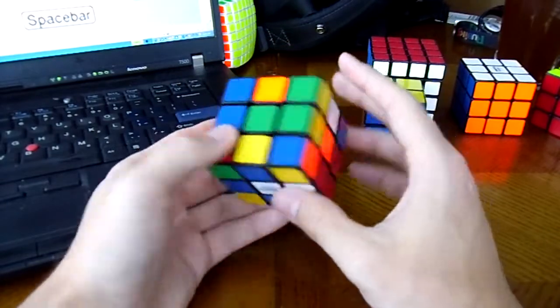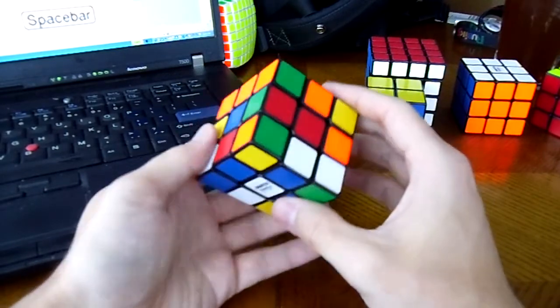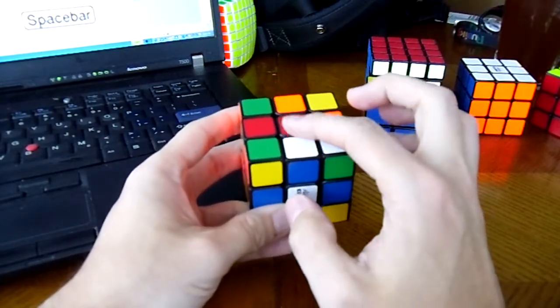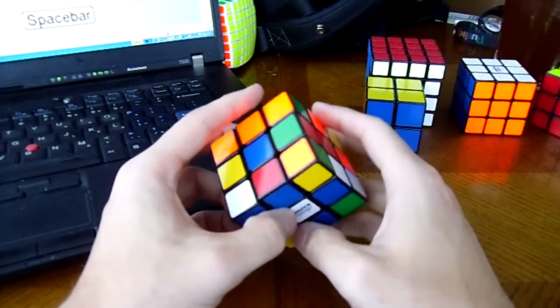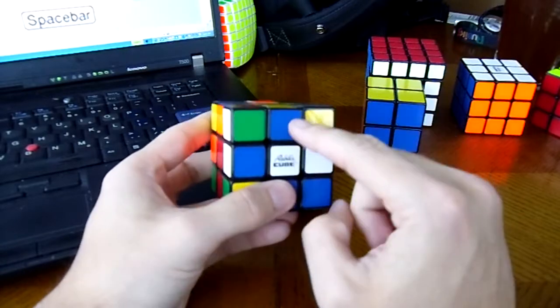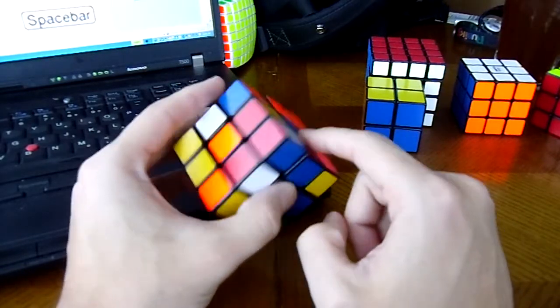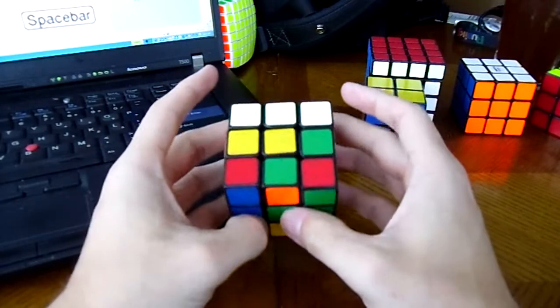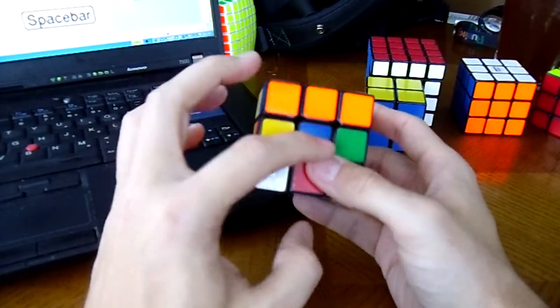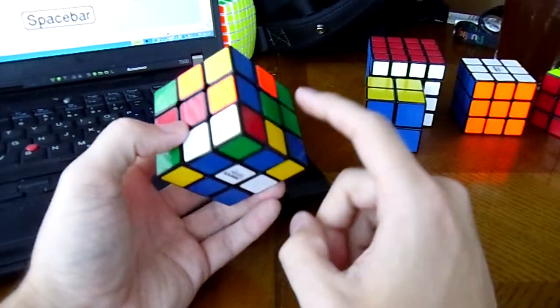So immediately when I look at this cross, here's what I'm thinking. I see red opposite orange here, which means ideally I would have orange here opposite red, then I'd have green here and blue here. Technically yeah, it would be blue then orange and then green and then red. So if I see green is up here, I could bring green down here.